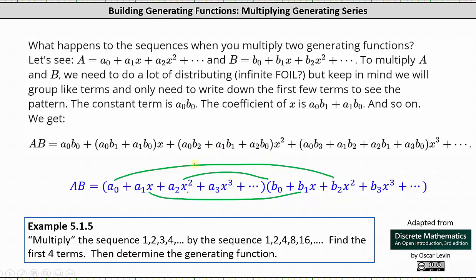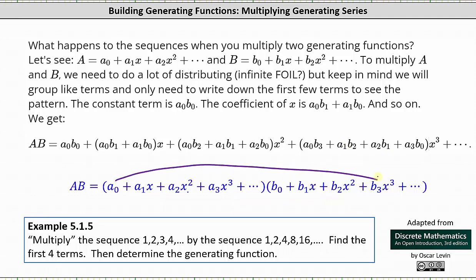And now let's determine the products that result in an x cubed term. We would get an x cubed term when multiplying a sub zero and b sub three x cubed, as well as a sub one x and b sub two x squared, as well as a sub two x squared and b sub one x, and finally a sub three x cubed and b sub zero. If we find these products and combine the like terms, the coefficient of the x cubed term is a sub zero times b sub three plus a sub one times b sub two plus a sub two times b sub one plus a sub three times b sub zero, which again is shown above.